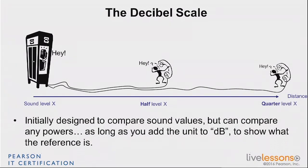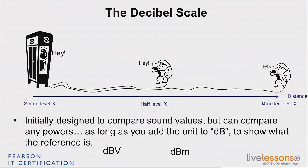The idea of reasoning in halves and doubles is useful in many fields. Bell Laboratories used the decibel scale for sound, but we use it for many other things — we just add a unit behind 'decibel' to specify the measurement type. For example, decibel volts, or watts and milliwatts. For milliwatts, that would be dBm, a value we use a lot.